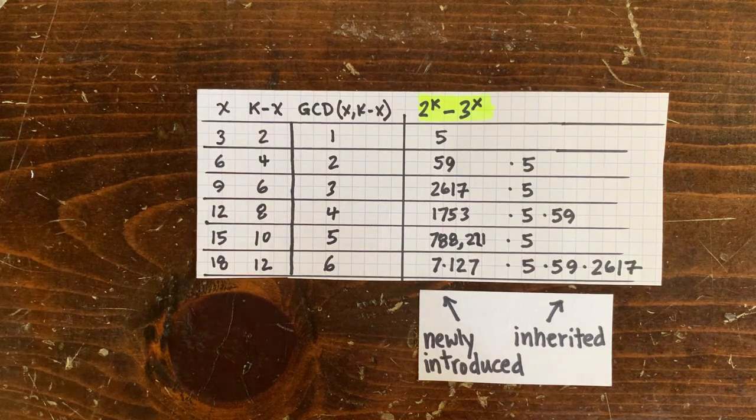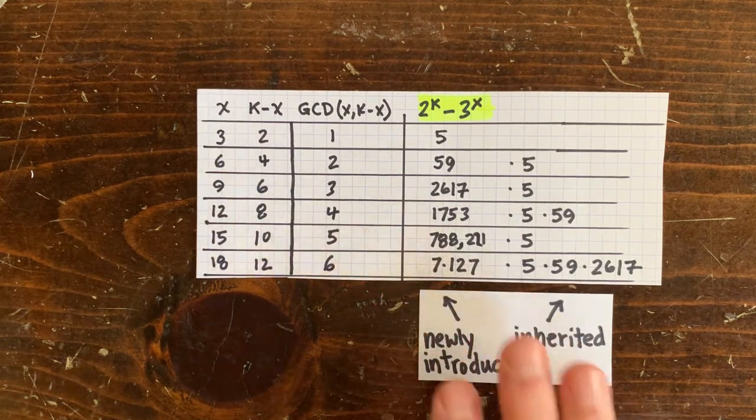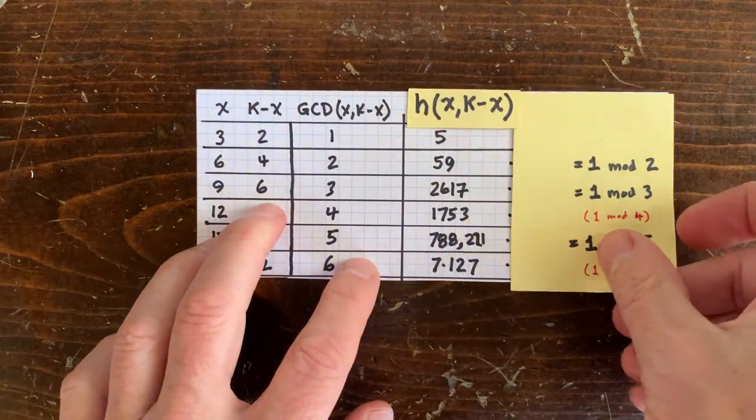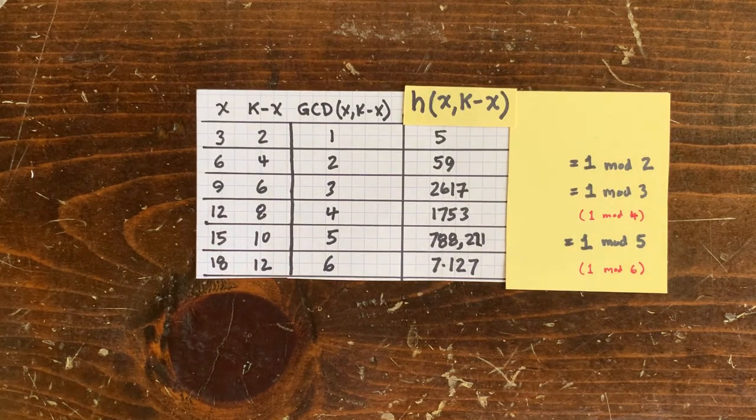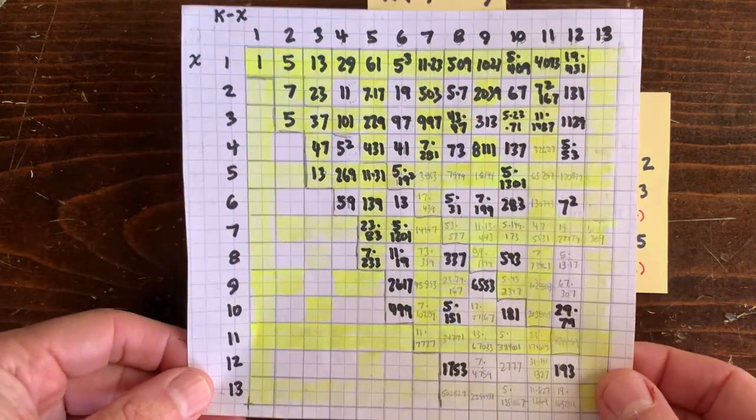We also have the newly introduced factors here. So we're going to call these numbers h of x, k minus x. If we only write down newly introduced factors, then we can simplify the 2 to the k minus 3 to the x chart.